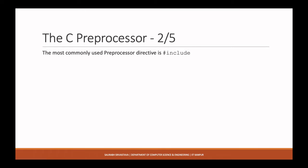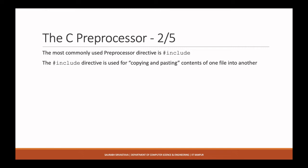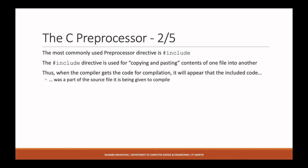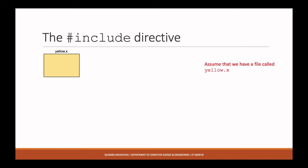The most common preprocessor directive you've probably already seen is the hash include directive. The hash include directive is nothing more than a copy-paste: it copies the contents of one file into another. When the compiler gets the code for compilation, it appears as though the code you included from the included file was just part of the source file itself. For example, if you write hash include stdio.h, the code of stdio.h gets pasted within your own C file.